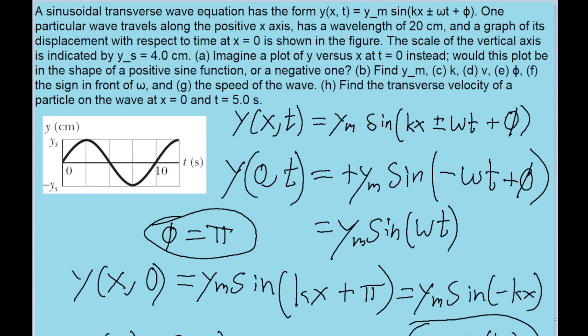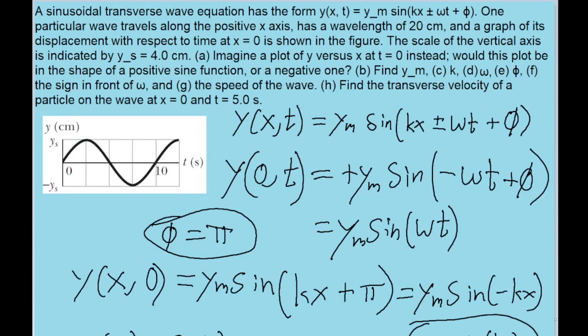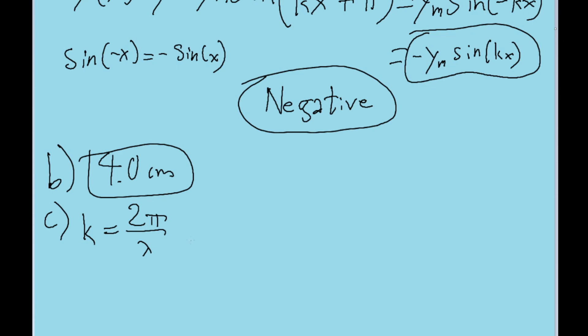Part c asks us to find k, the angular wave number. Now we're getting into the part of this problem where it's just a lot of formulas that you kind of want to know. And the formula for the angular wave number k is equal to 2π divided by the wavelength. And the wavelength is given to us by the problem. The wavelength is given to us as 20 centimeters. So we put that into our calculator. Then we find an angular wave number of 0.31 radians per centimeter. So that's the angular wave number of the wave.